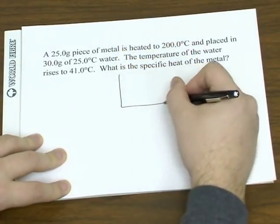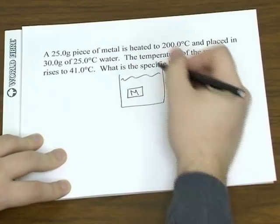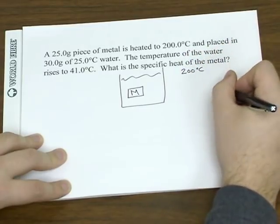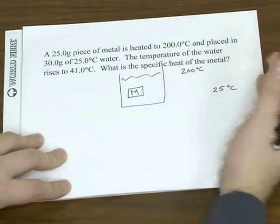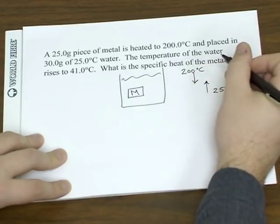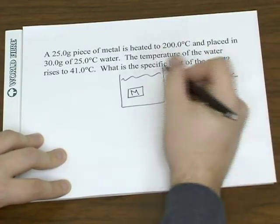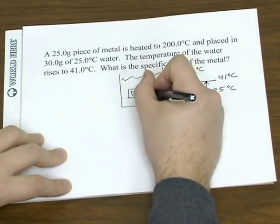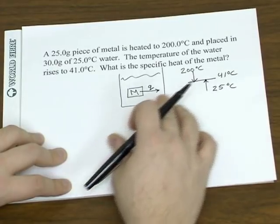So if you think about what's happening, you've got this hot piece of metal at 200 degrees, and you put it in the water. The water starts off at 25 degrees. When you put the hot metal in the water, the temperature of the water goes up. The temperature of the metal gets cooled off by the water until they both reach 41 degrees. And the reason that this is happening is because the metal is transferring heat or releasing heat into the water.